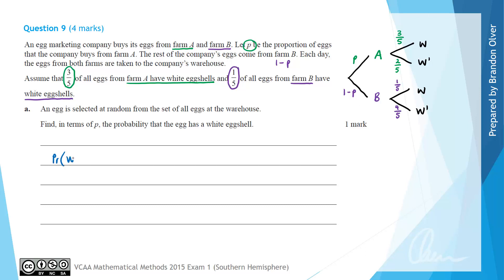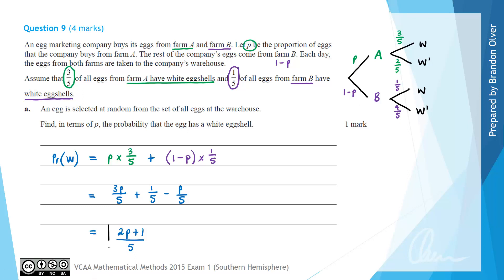The probability that the egg shell is white equals the two branches that lead to a white egg shell, multiplying along each branch. So we have P times 3 over 5, plus (1 minus P) times 1 over 5. This equals 3P over 5 plus 1 fifth minus P over 5. Simplifying, 3P minus P gives 2P, so the answer is (2P + 1) divided by 5. That is the answer to part A.